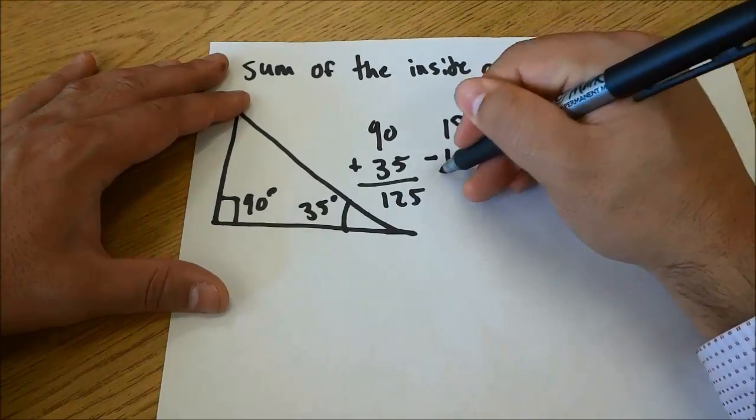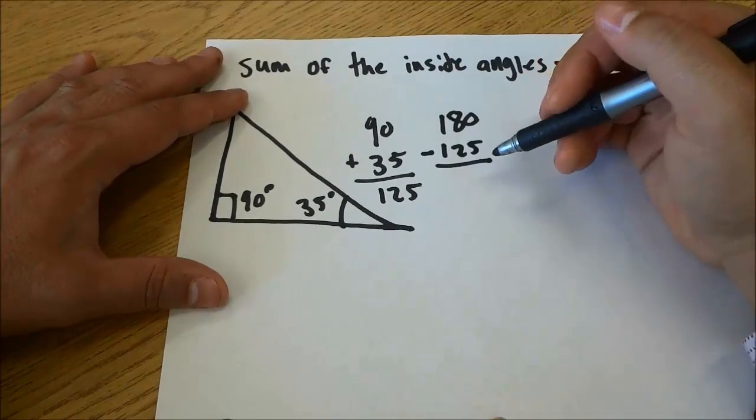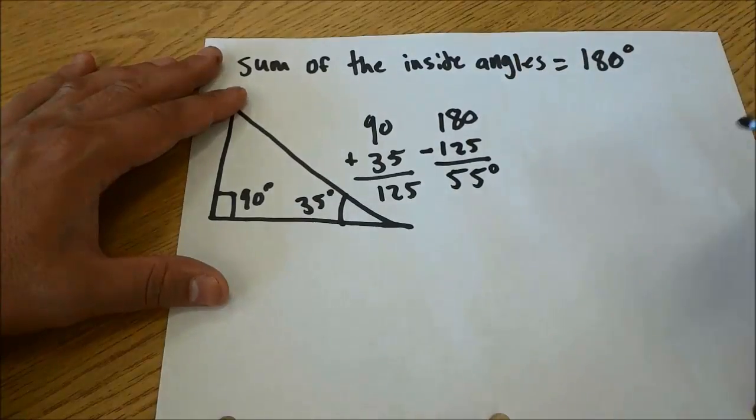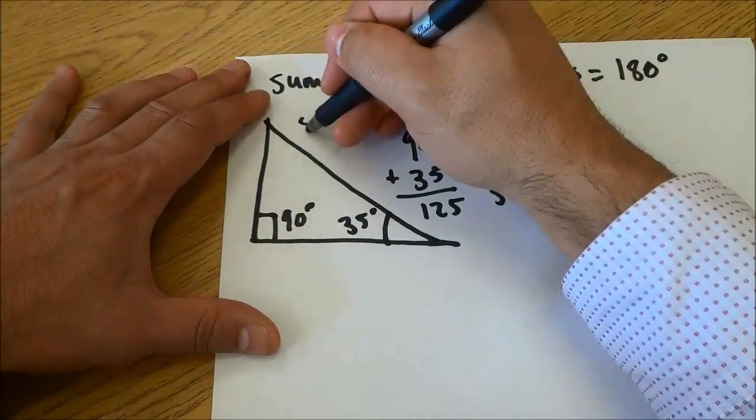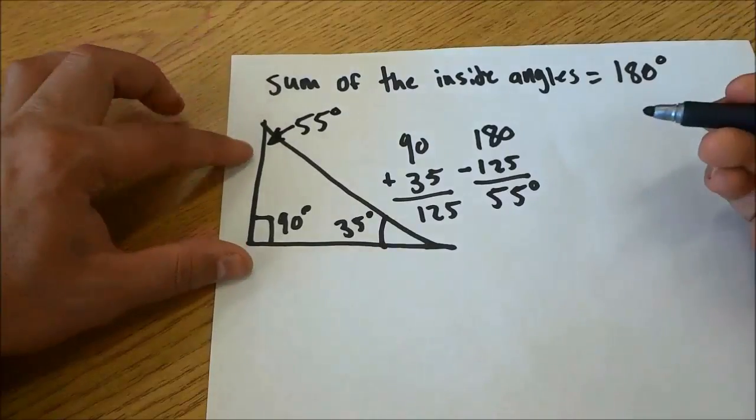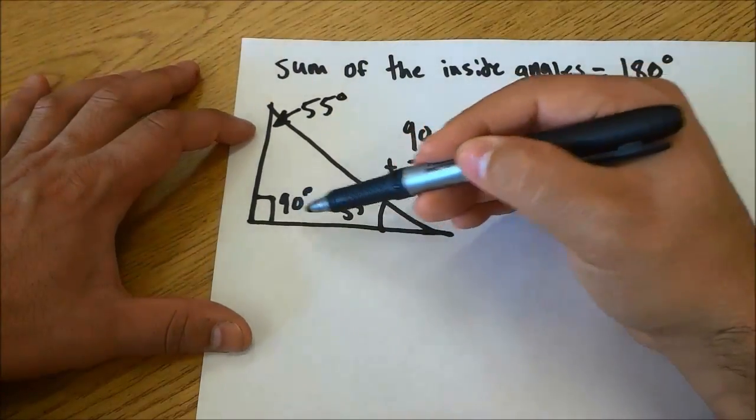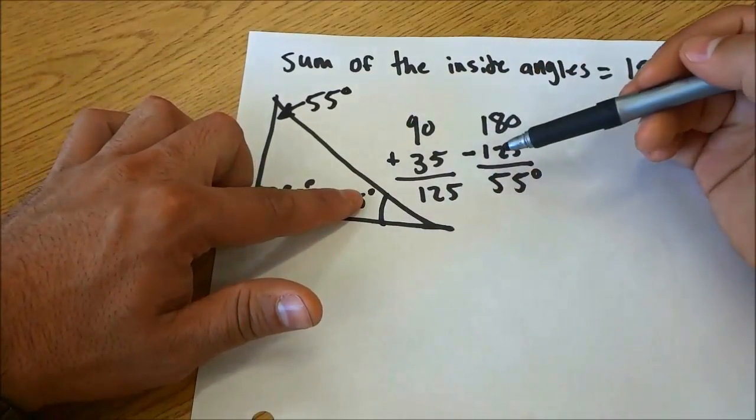I'm going to subtract 125 from 180 and that is going to give me 55 degrees. So the missing angle right here is 55 degrees. I'll just write that up here, 55 degrees and I'll just put a little arrow. I found that out by adding together the two angles that I had and subtracting that sum from 180.